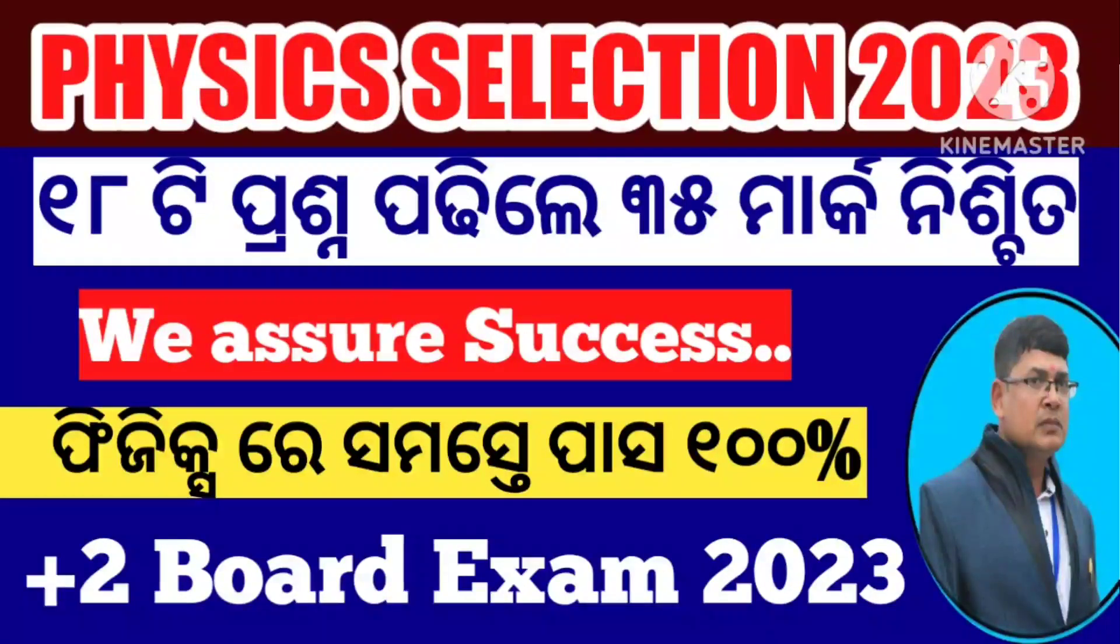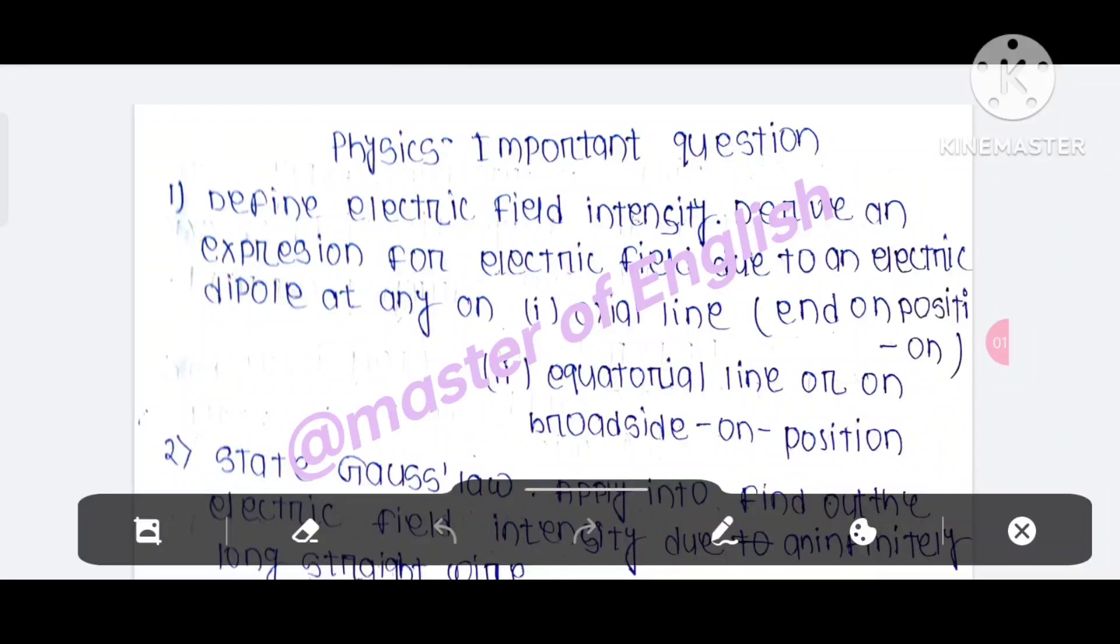So you can see that, like this. The first question is to define electric field intensity and expression for electric field due to an electric dipole.